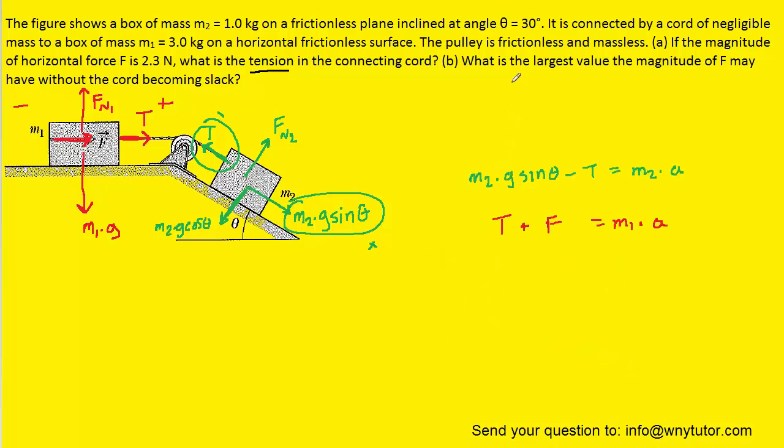Now moving on to part B, which asks, what is the largest value the magnitude of F may have without the cord becoming slack? Notice in the original picture, the cord is pulled very tightly. So if we redrew it over here, the rope would be very straight, pulled very tight, and would not yet be slack. However, notice that as we push harder with this force F, the harder we push, the more likely this rope will become slack.